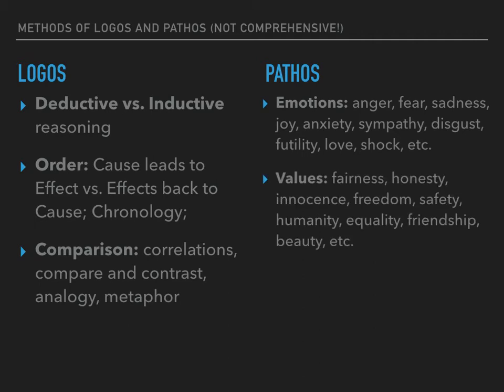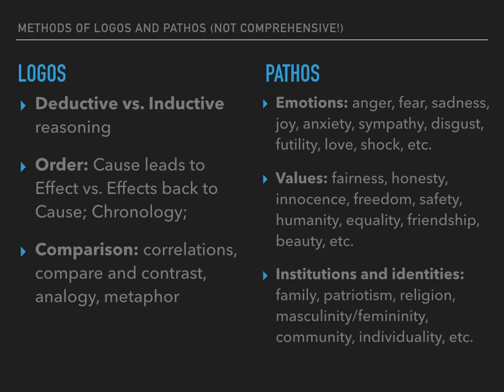Another less obvious way an author can use pathos is to think about and draw on something the audience values. Sometimes values are nearly universal, even if we might value them more or less based on the context or issue — so fairness, honesty, innocence, freedom, safety, humanity, equality, friendship, beauty. Others are very particular and tied to specific institutions, cultures, or identities.